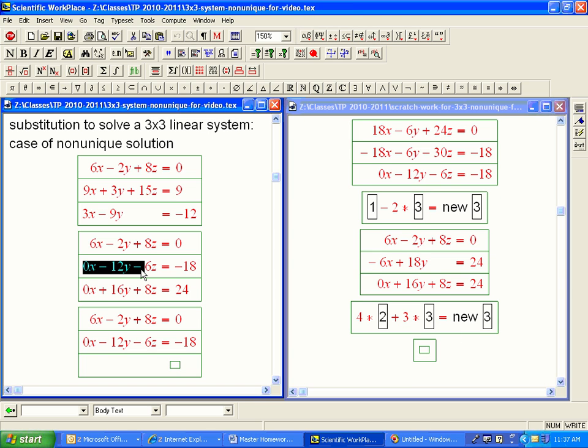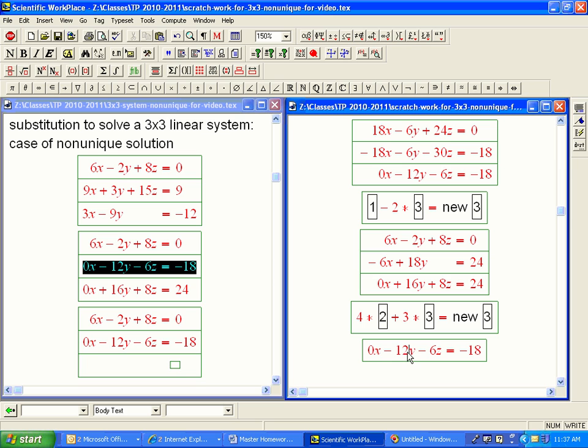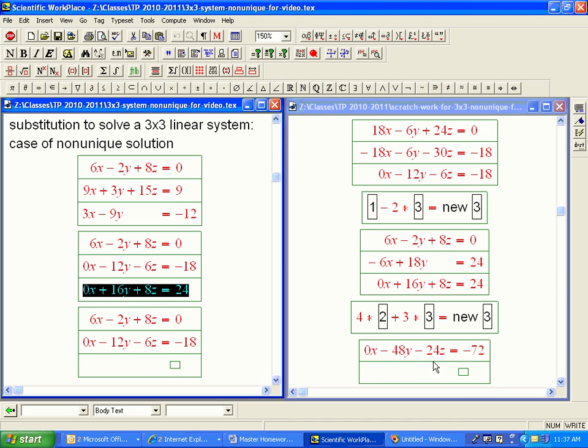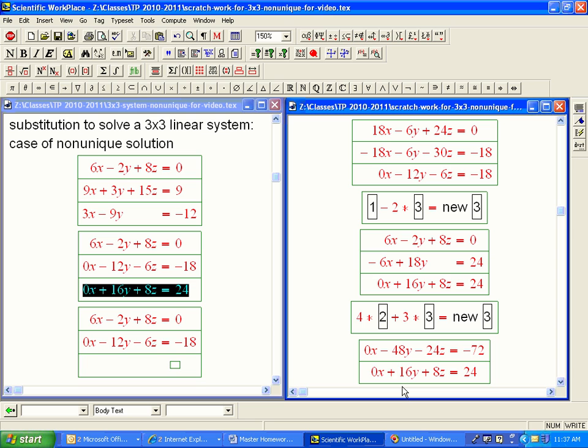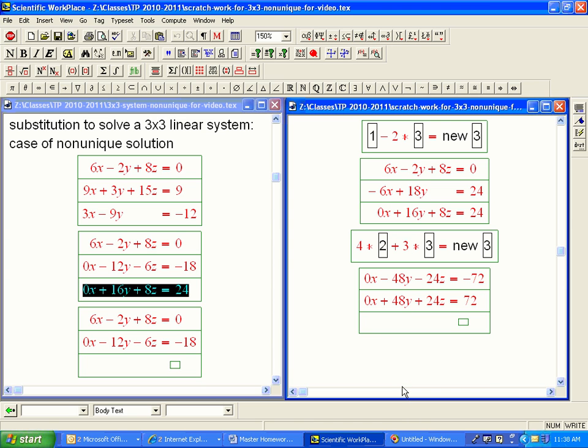So we're going to take this guy. That's our tool. But we're going to go ahead and multiply it by 4. And that's a 72. Then we're going to bring in this guy, which is what we want to work on. Multiply it by 3. So the 48, that's going to match. That's crucial. 24, that's interesting. That matches. And oh, that matches. And I'm going to add them together. Oh my goodness. That's going to be 0x plus 0y plus 0z equals 0.